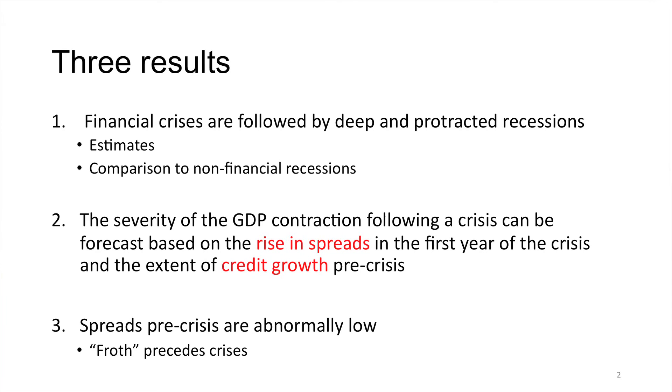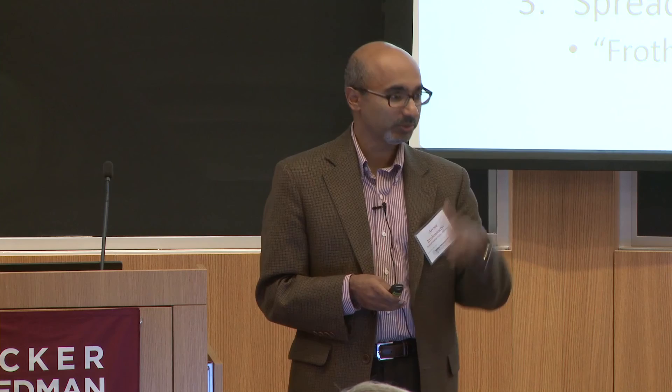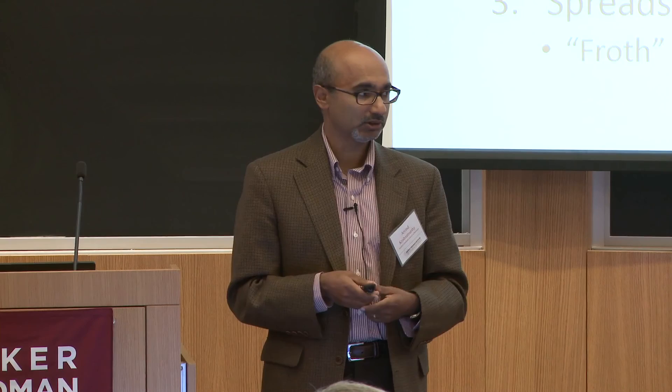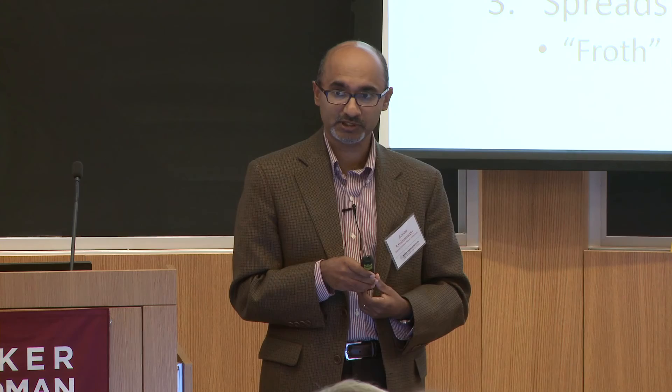The last result is evidence that spreads pre-crisis — before the crisis starts — are in some sense abnormally low. I'll be more precise about what abnormal means, but spreads look unusually low. This fits with the narrative that froth precedes a crisis. We have lots of crises, so one doesn't have to just look at 2008 to say this. It seems like this is empirically true.